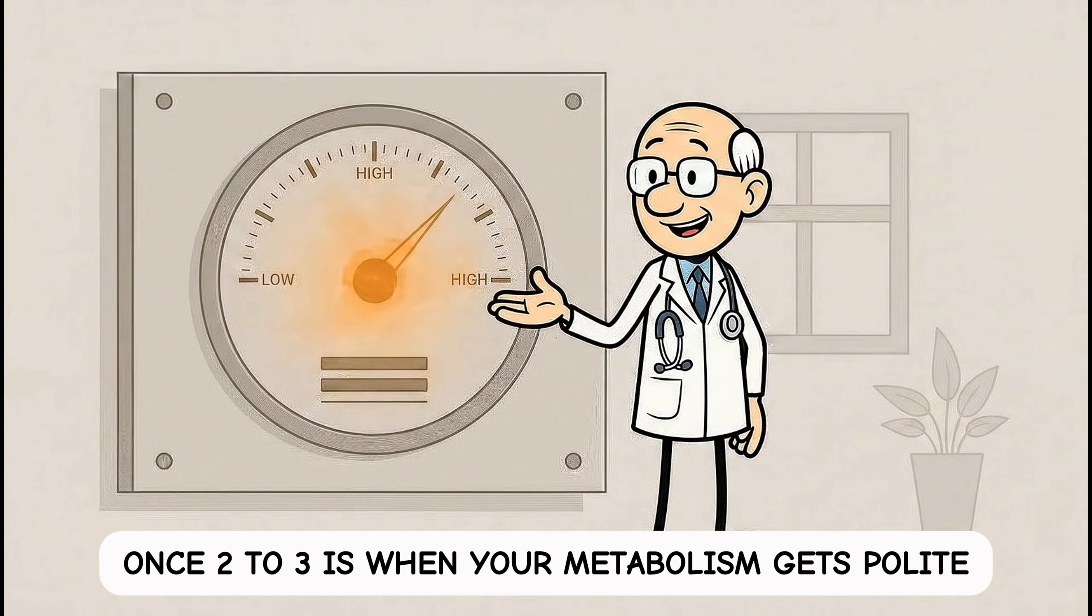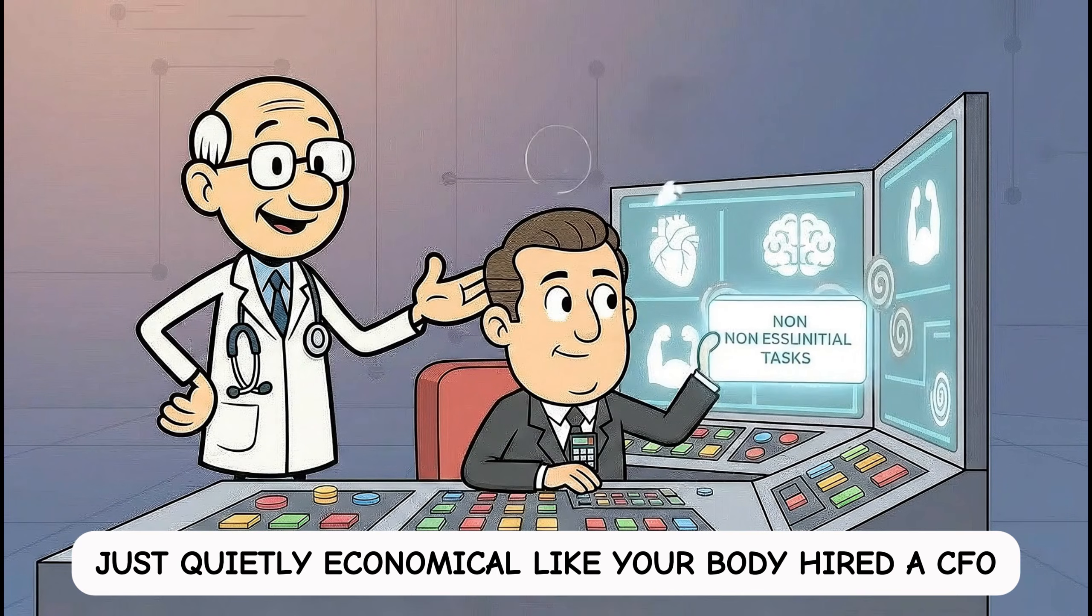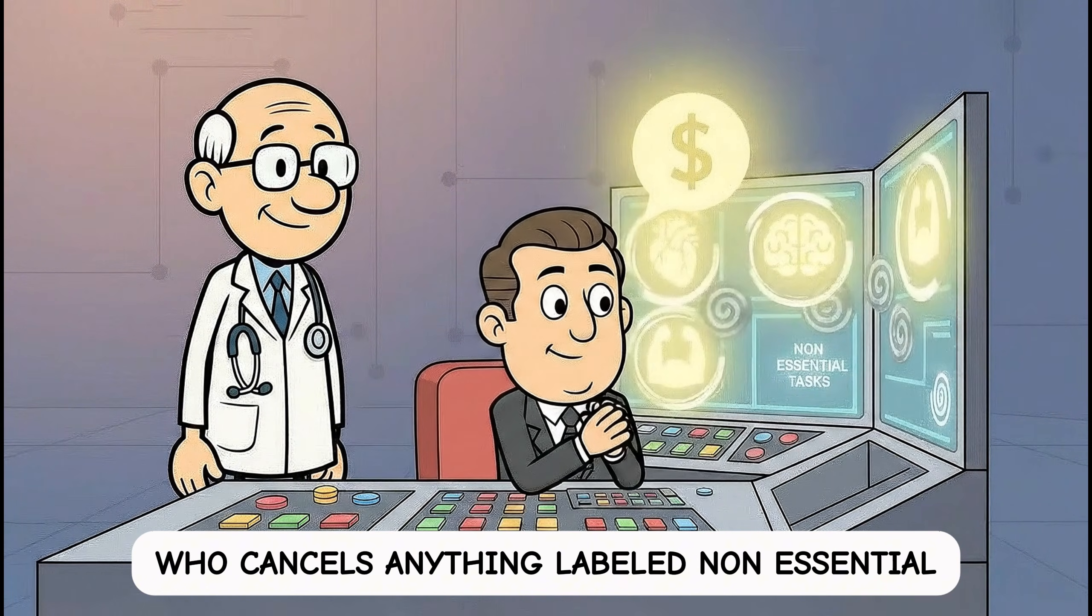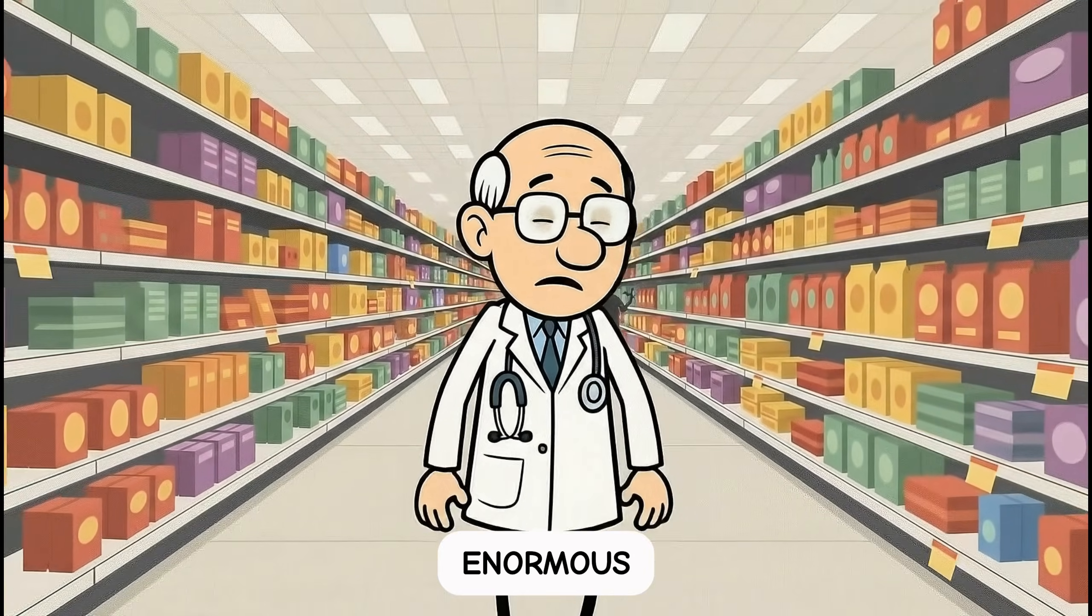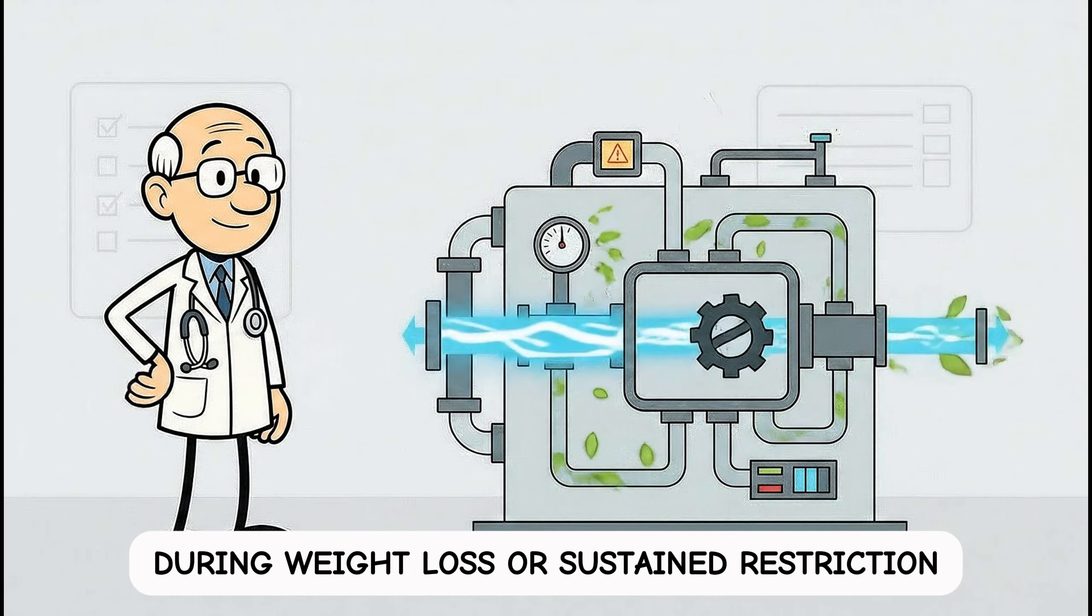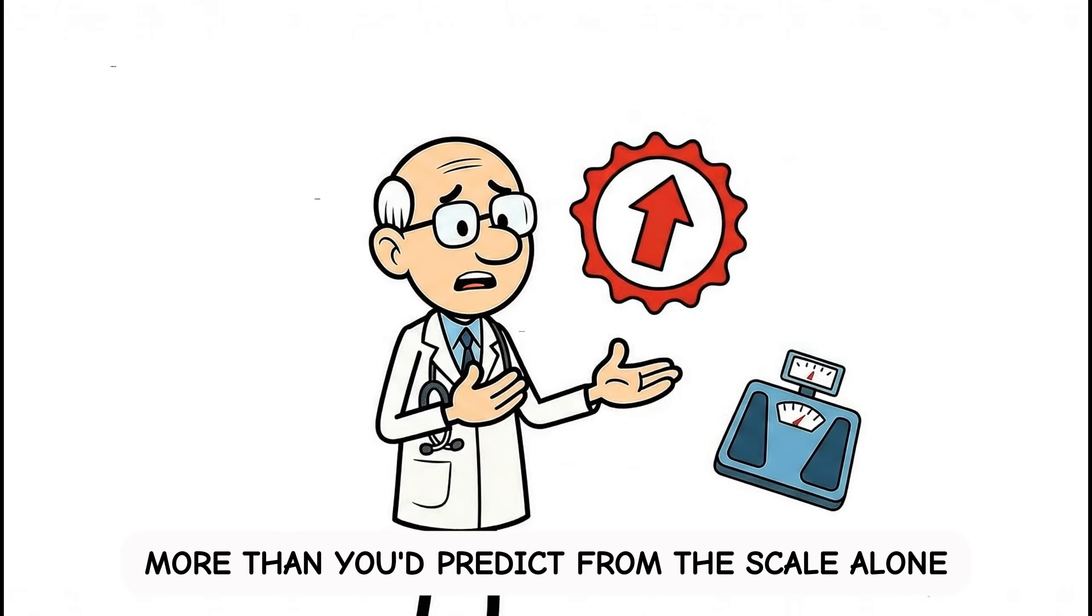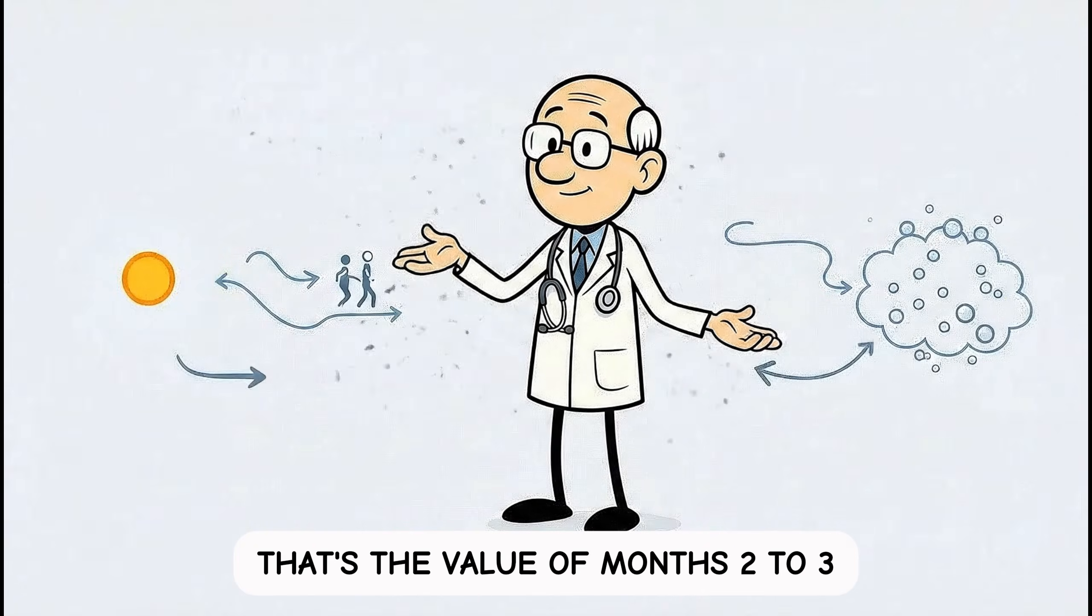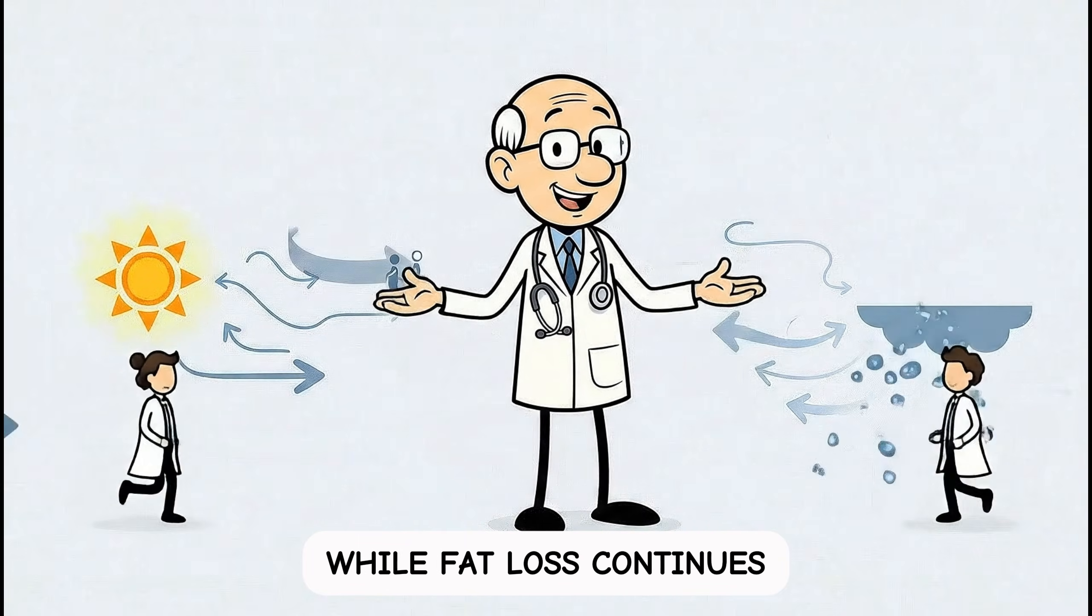Months 2 to 3 is when your metabolism gets polite. Not broken. Not damaged. Just quietly economical, like your body hired a CFO who cancels anything labeled non-essential. You fidget less, take fewer extra steps, and the store suddenly feels enormous. Researchers call part of this adaptive thermogenesis. During weight loss or sustained restriction, energy expenditure can drop more than you'd predict from the scale alone, and it can push you toward regain if you don't notice it happening. That's the value of months 2 to 3. Build a setup that keeps energy and movement alive while fat loss continues.